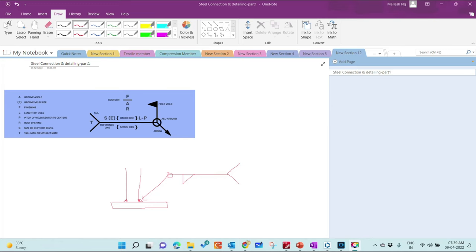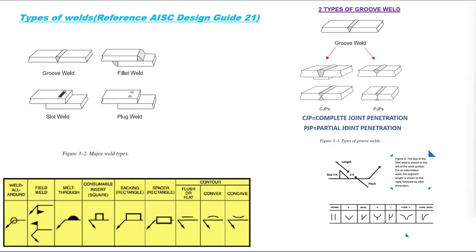As per the American standard AISC, you can refer to AISC Design Guide 21. The major types of weld are: groove weld, fillet weld, slot weld, and plug weld. Within these, there are many derivatives based on edge preparation. When it comes to groove welds, we have two types: CJP (Complete Joint Penetration) and PJP (Partial Joint Penetration). I will explain those in the next slide.